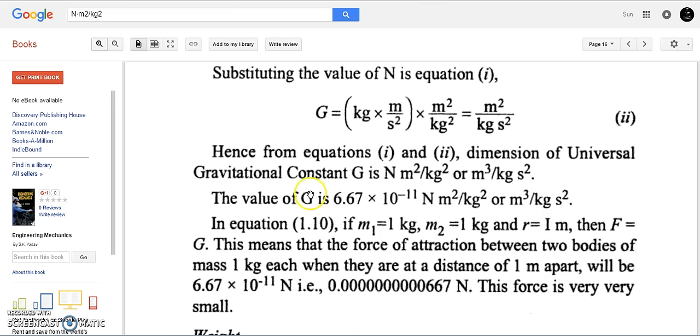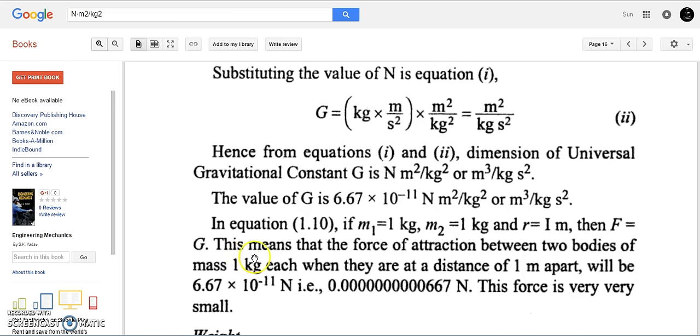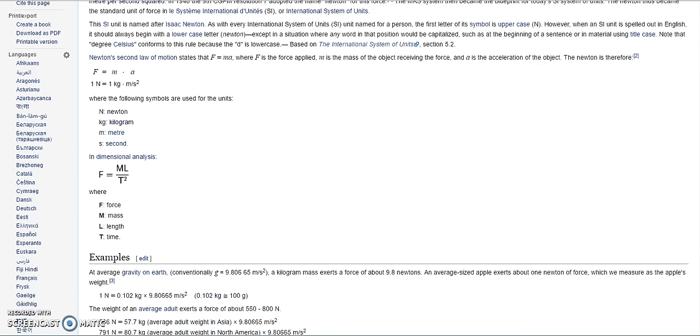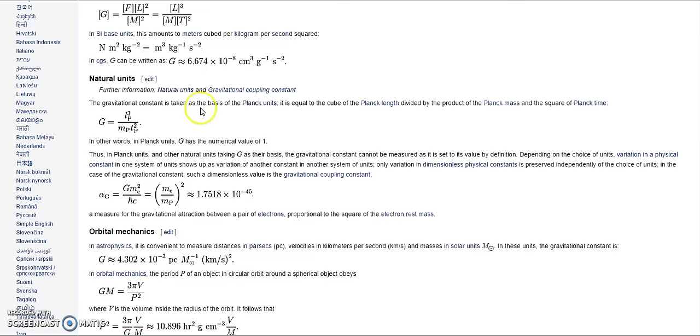So I found another book here, Engineering Mechanics, and they also put up the same equation for the value of G, this so-called gravitational constant. And this means that the force of attraction between two bodies of mass, one kilogram each, when they are at a distance of one meter apart, will be 6.67 times 10 to the power of negative 11 Newtons, i.e., this infinitesimal number of Newtons. This force is very, very small. In other words, again, it can literally be omitted. And how do you omit something in an equation? Well, as a multiplier, you would turn it into a 1. And this is what is going on. This equation is bunk.